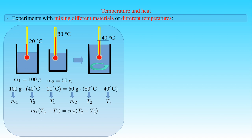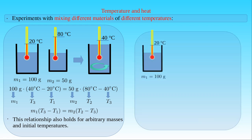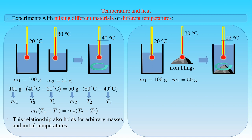If we mix water with different masses and initial temperatures and measure the temperature of the mixture, we can demonstrate that this relationship holds for arbitrary masses and initial temperatures. We can also mix different solid materials in water. For example, we take 100 grams of water at 20 degrees Celsius again, and we heat up 50 grams of iron filings to 80 degrees Celsius. If we pour the hot iron filings into the container and mix with the cold water, we can measure the temperature of the mixture. Although we cannot establish the same relationship between the masses and temperature changes of the water and iron filings, we still have the following equation.